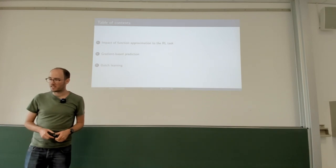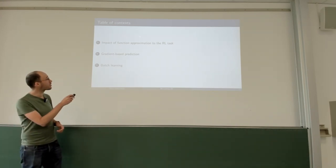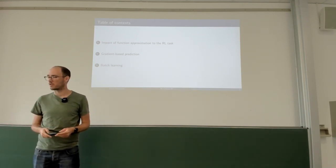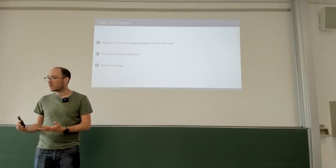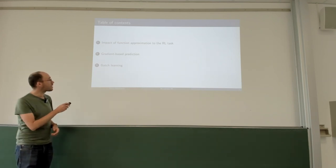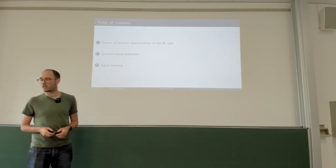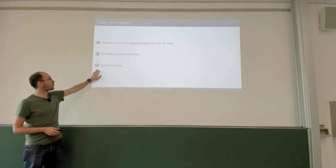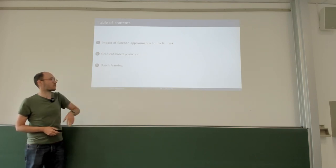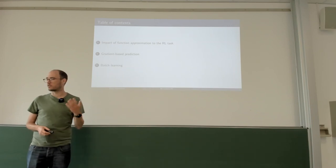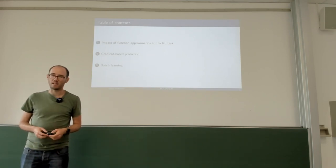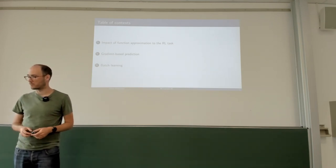The table of contents for today: we will first discuss on a very general level the impacts of function approximation on reinforcement learning — what is different, what is similar to tabular methods. Then we will learn about gradient-based prediction: how do we use function approximation and gradient-based learning? And then we will learn about batch learning — how can we use a fixed amount of data to learn how to predict the value function as efficiently as possible?